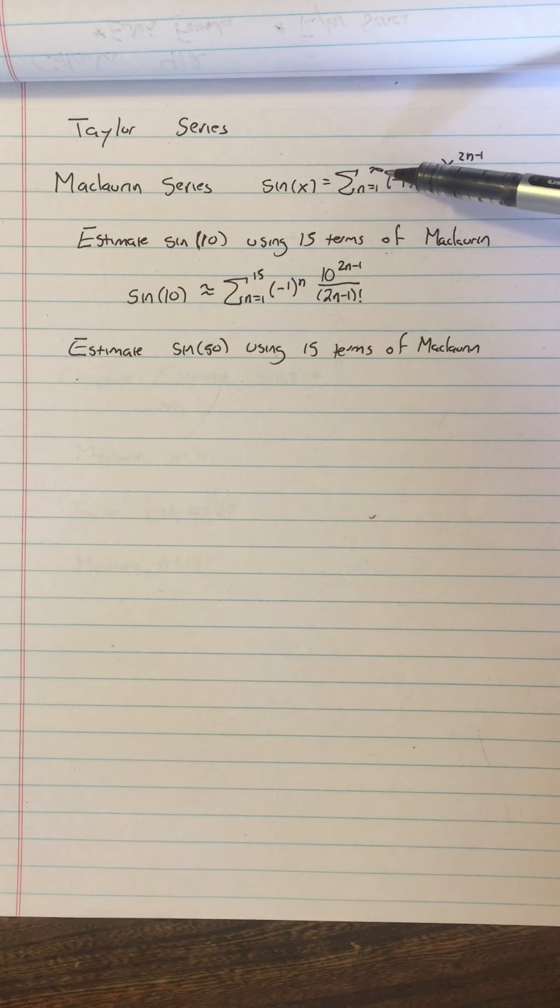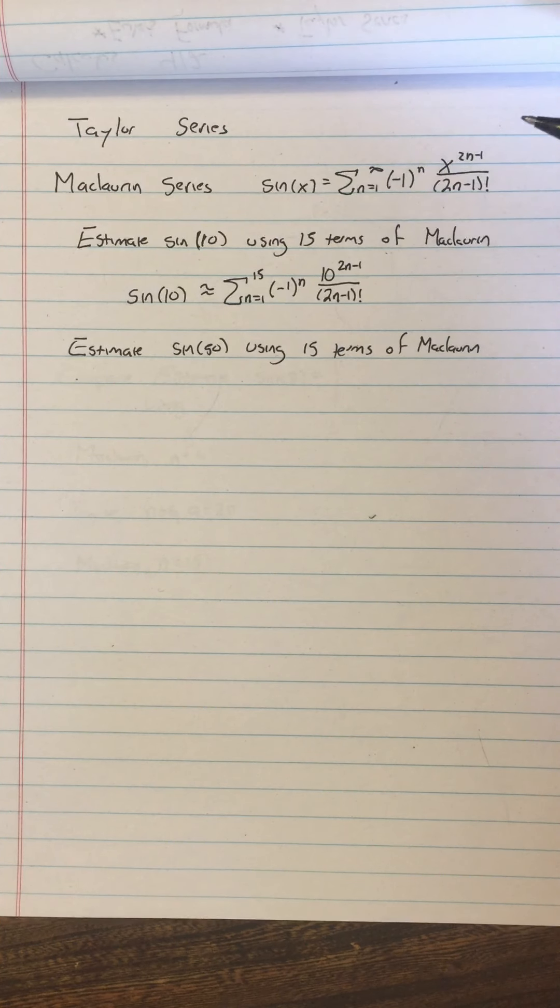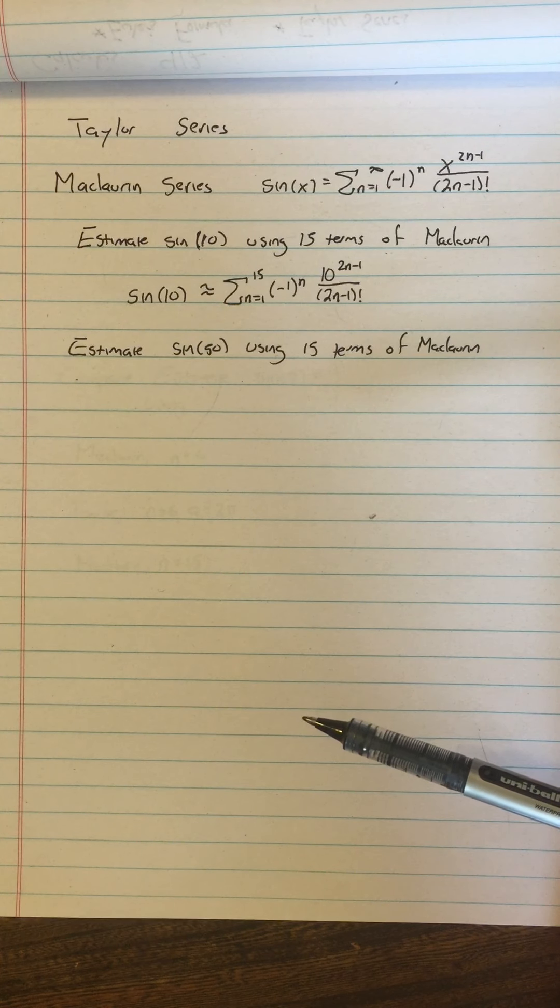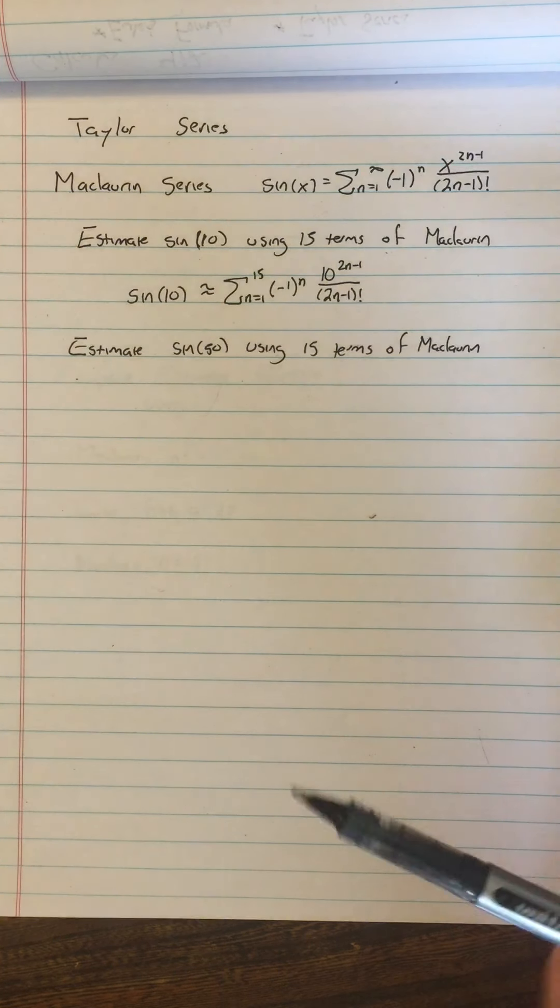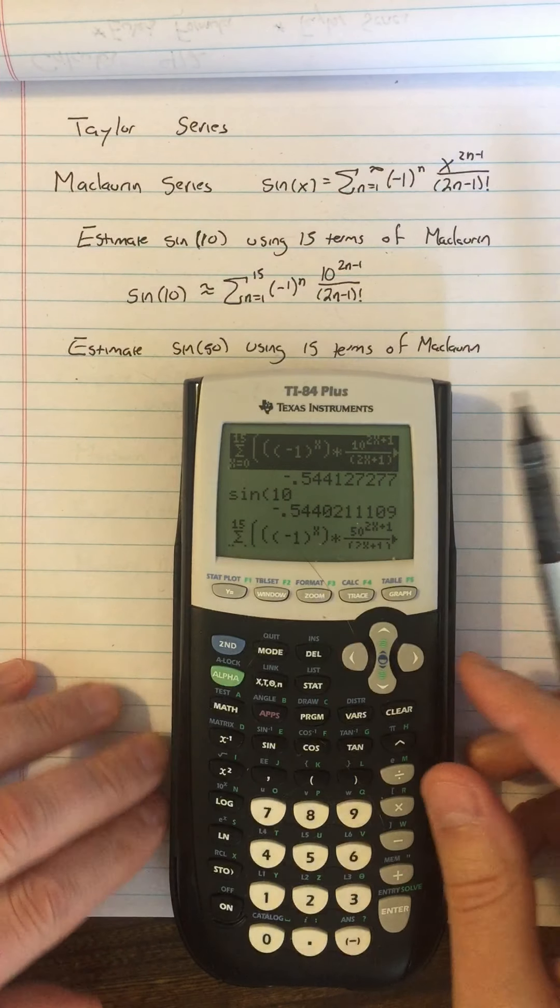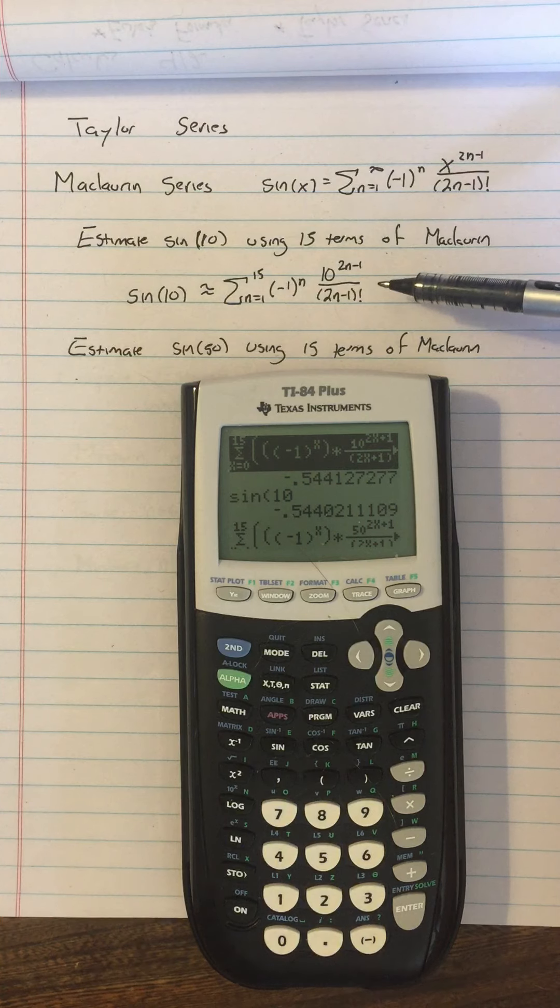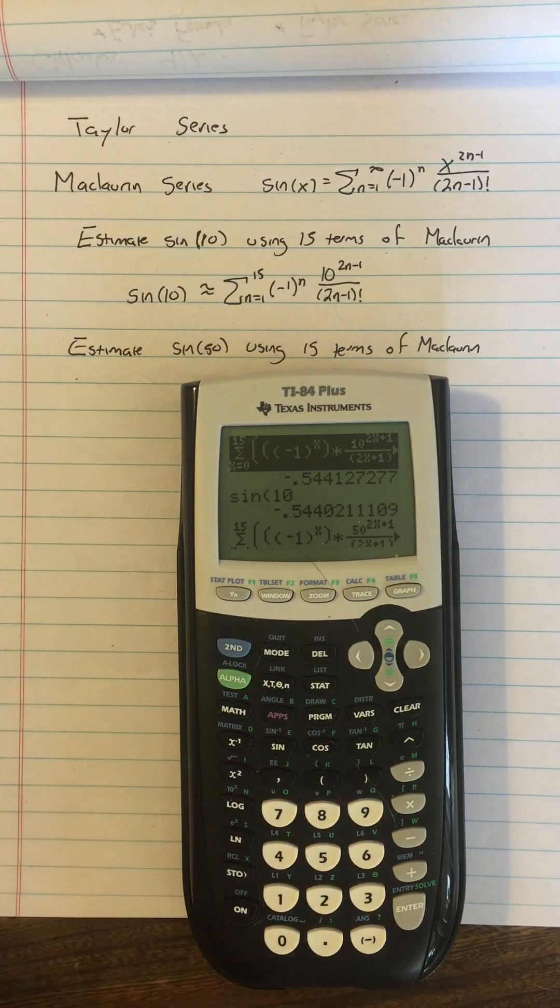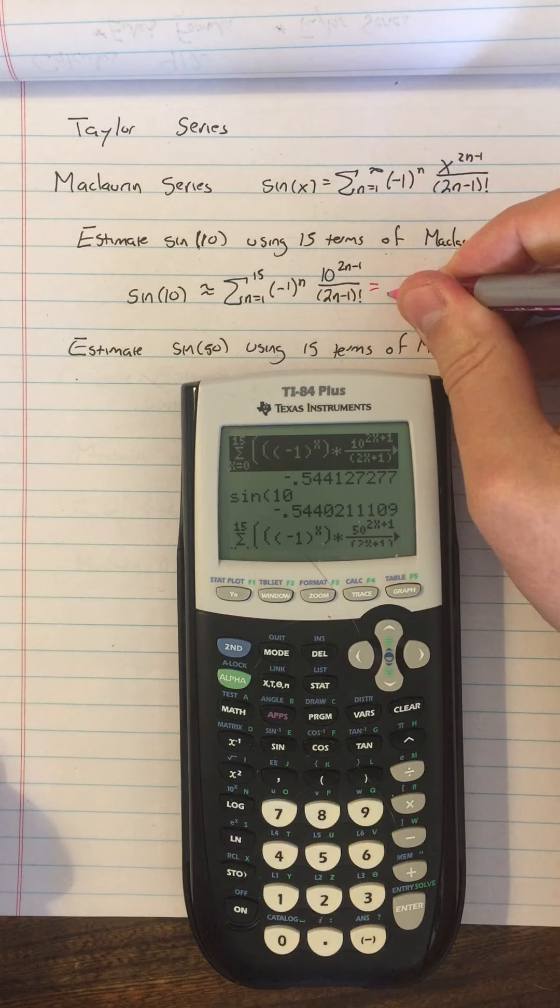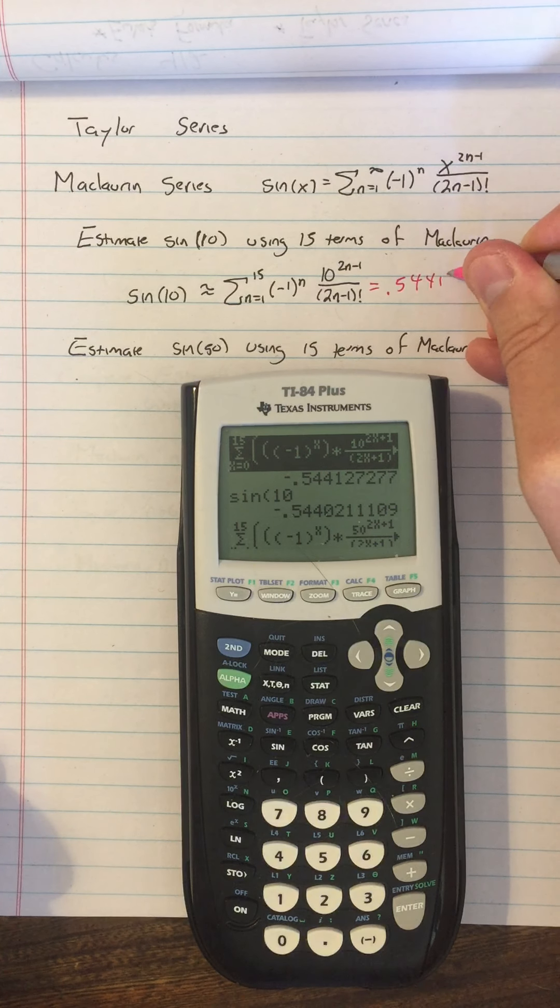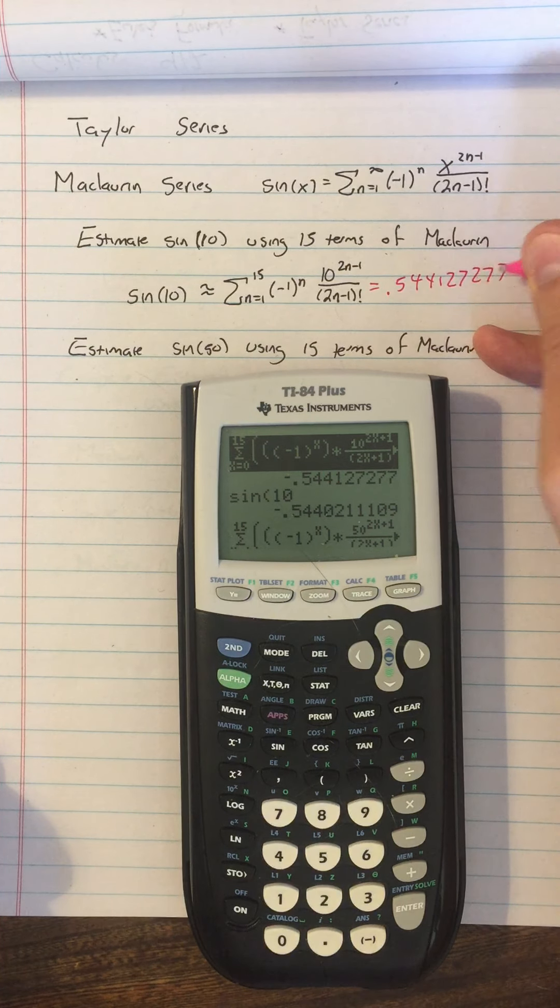Using 15 terms means we're going to use instead of n equals infinity, which would give us an exact amount, we're going to use n equals 15, which is not exact, but it's doable. So we've done that actually, and I just pulled it up in the calculator here from before. And here's that summation, and it turns out to be negative 0.544127277.